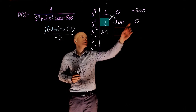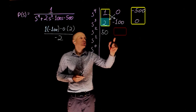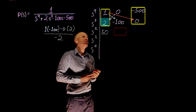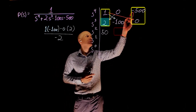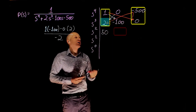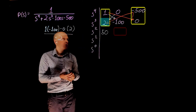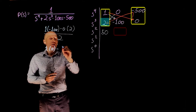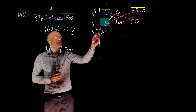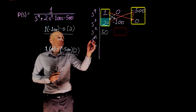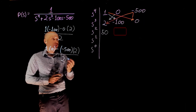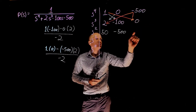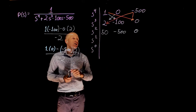Now let's find the element next to 50. We now have an extra column to use. Instead of 1 and 100, we use 1 and 0, minus negative 500 times 2, divided by negative 2. So this element is 1 times 0, minus negative 500 times 2, divided by negative 2, which gives negative 500. The next elements here are 0 — no calculation needed since the next column is all zeros.